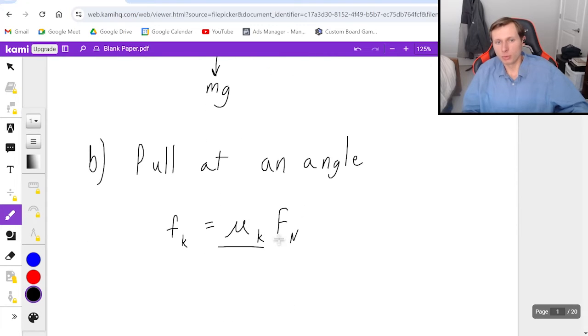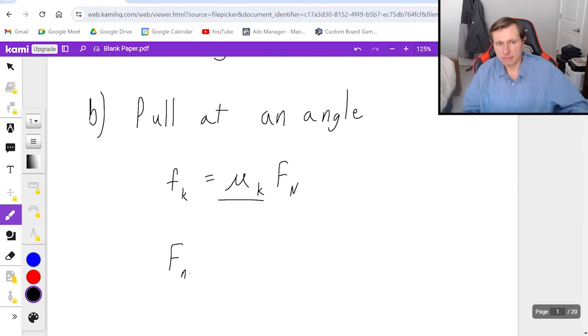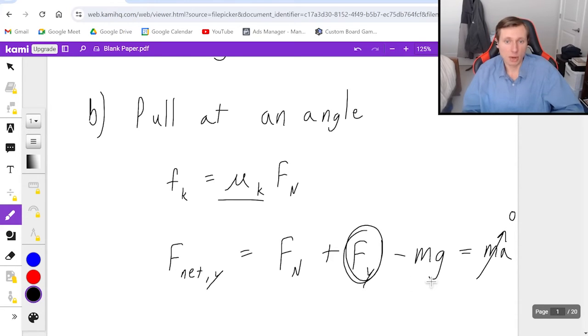Because if we think about where normal force comes from, it comes from F net in the y direction is equal to all the forces going up, so Fn plus the force, the y component of force of the pulling force, minus forces going down mg equals mass times acceleration, which is zero in this case, because we're not going up and down.